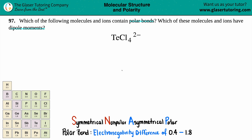So in this case, we have tellurium, Te, in the middle, surrounded by the four chlorines — one, two, three, and four. We have four single bonds because chlorine has seven valence electrons, so it just needs that one extra bond. Each chlorine will have six dots around it just to complete its octet, and then we'll worry about what's going on with tellurium.